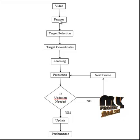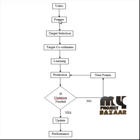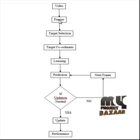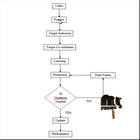The median filter considers each pixel in the image and looks at its nearby neighbors to decide whether or not it is a representative of its surrounding. Identified noisy pixels are replaced by the median of the neighboring pixel values. The median is calculated by sorting all pixel values from the surrounding neighborhood into numerical order and replacing the pixel being considered with the middle pixel value.